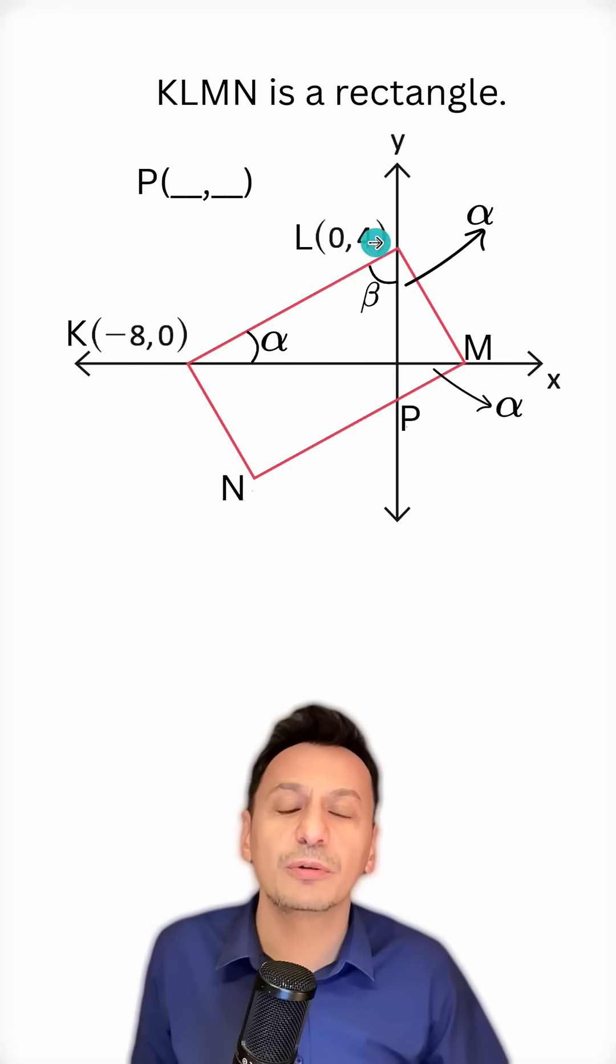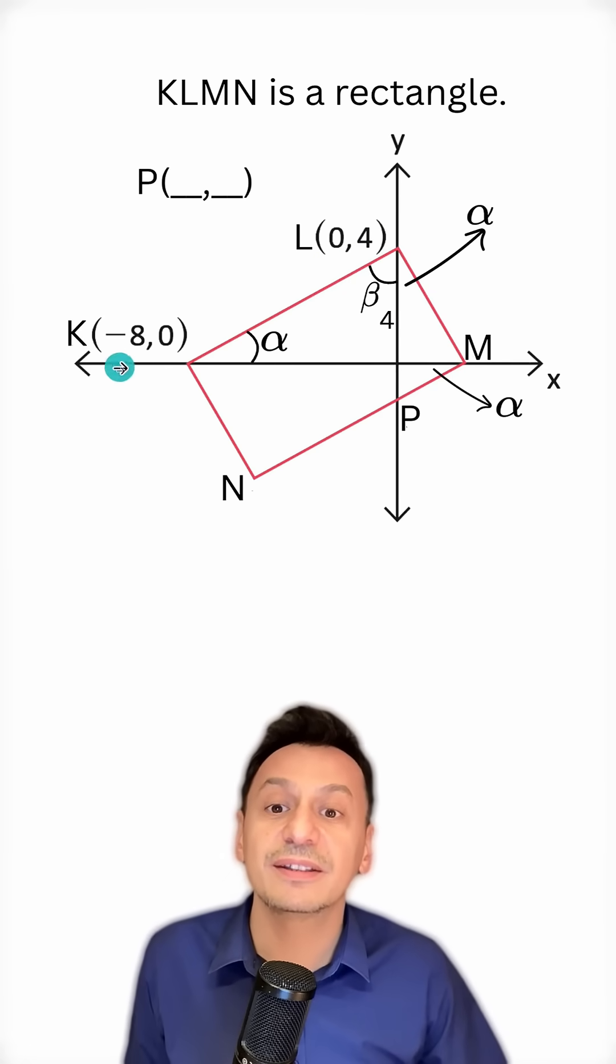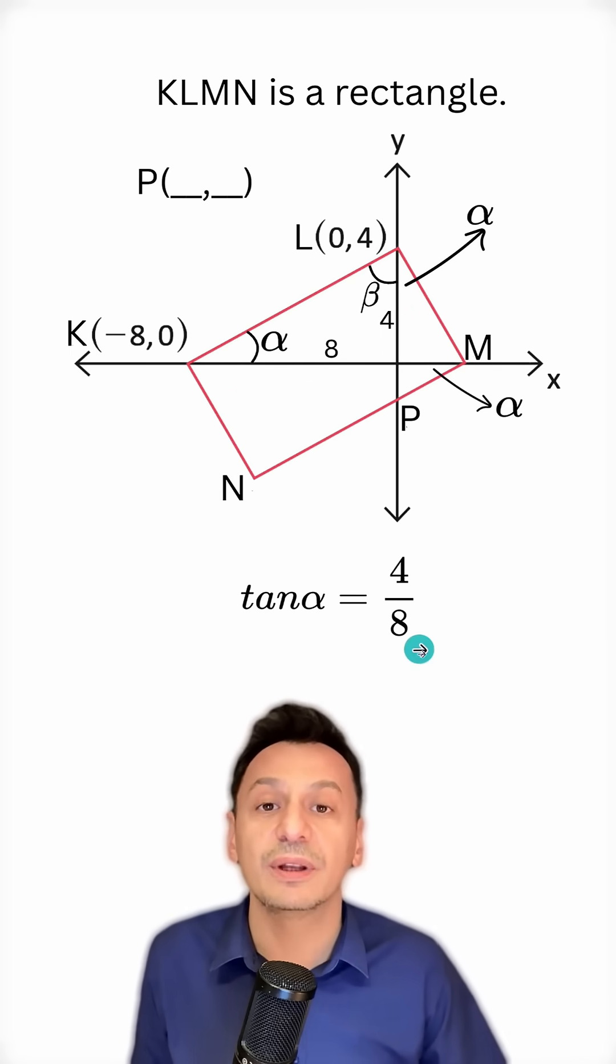Since the ordinate of point L is 4, I call this length here 4. And since the abscissa of point K is minus 8, I call this length here 8. Now I'm going to write the value of tangent alpha: 4 over 8, or if we simplify, 1 over 2.